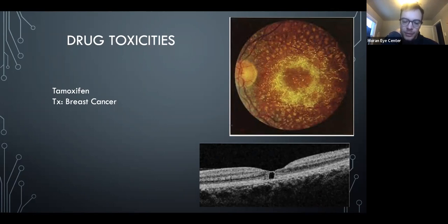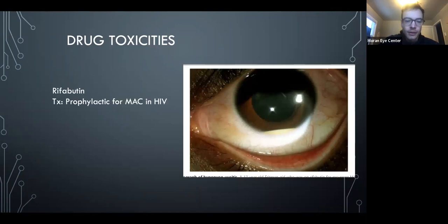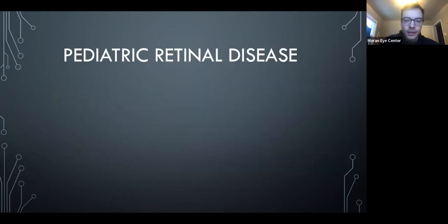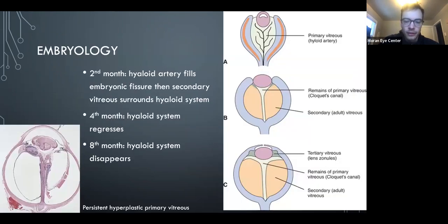Rifabutin is used for HIV patients as MAC prophylaxis, and it causes a sterile hypopyon — something that could be confused with endophthalmitis. We don't see this much anymore, but they still occasionally ask about it.